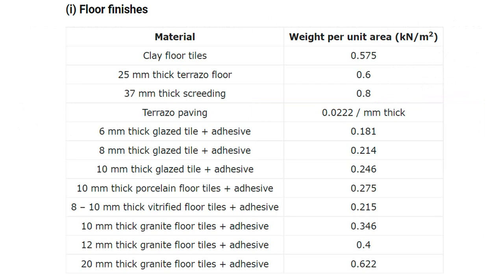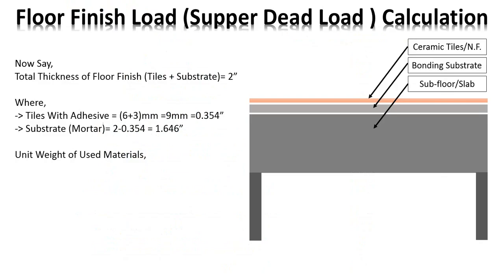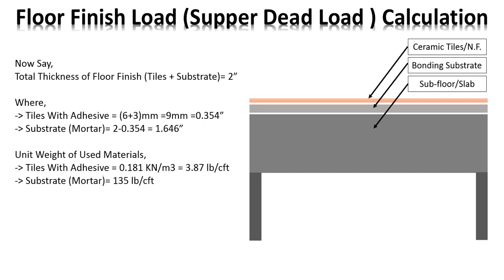Here is the unit weight of floor finish materials. For 6 mm tiles with adhesive, the unit weight is 0.181 kilonewton per meter square, equal to 3.87 pounds per cubic feet. For mortar, it is approximately 135 pounds per cubic feet.